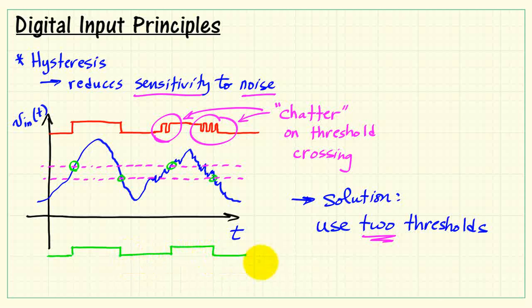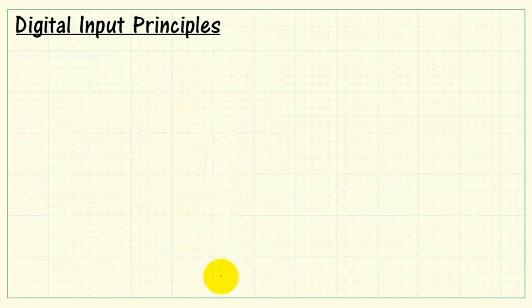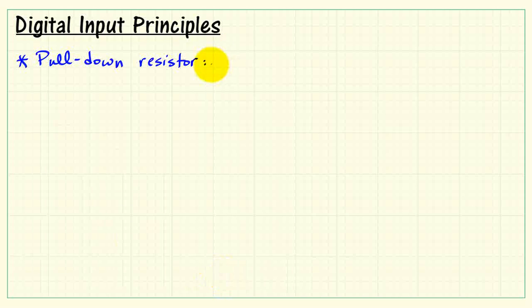The nice thing about this is once you've crossed the threshold, you get a clear, unambiguous indicator that your signal has changed. That gives us a nice, clean transition, even when we have a pretty significant amount of noise on the signal. Hysteresis is a very important property of a good digital input.